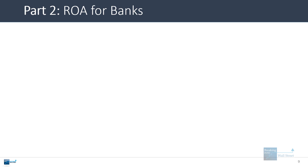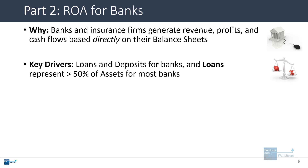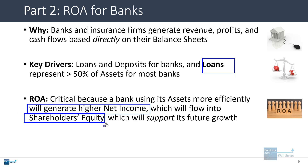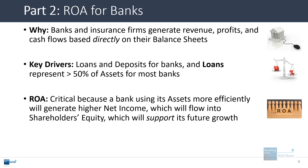Let's now move to return on assets for banks. Banks and insurance firms generate their revenue, profits, and cash flows based directly on their balance sheets — for banks, loans and deposits are the key drivers. Loans are on the asset side, deposits are on the liabilities and equity side, and loans are often over 50% of total assets for most banks. So the return on assets metric is critical here because a bank using its assets more efficiently means it's earning more from its loans, generating higher net income. That higher net income flows into shareholders' equity, which supports future growth because a bank can only issue loans in relation to its shareholders' equity. A bank doing this more efficiently will be able to grow more quickly and should be worth even more in the future.